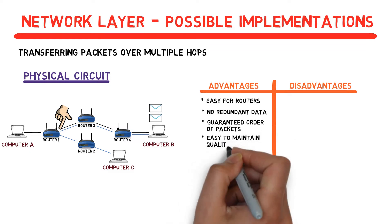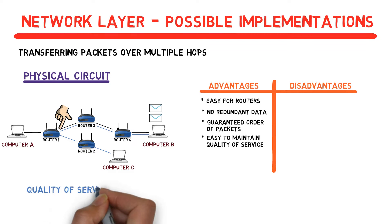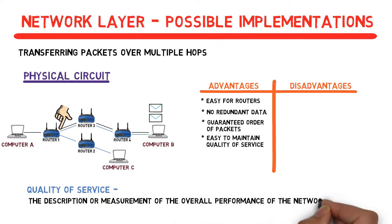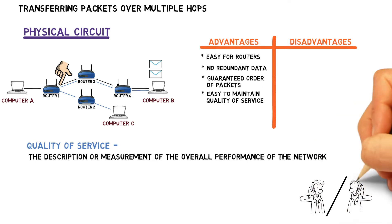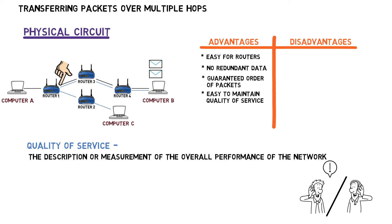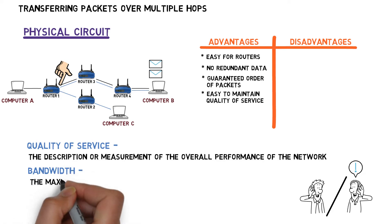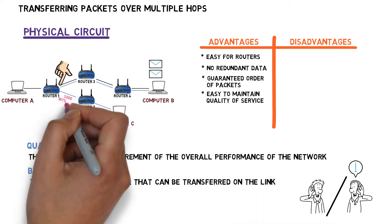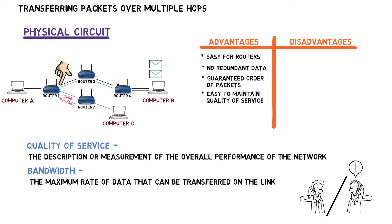It is also very easy to maintain quality of service in this model. Quality of service is the description or measurement of the overall performance of the network. For example, consider a mobile phone network where users experience lots of delays — one person says something and it takes a long time for the person at the other end to hear it. Such delays may occur because a channel between routers is jammed, meaning lots of traffic is going through it. Every link has bandwidth, that is, the maximum rate of data that can be transferred on the link. If a link can handle 1000 bits per second and we try to send 1500 bits, then 500 bits are liable to be dropped, meaning low quality of service.